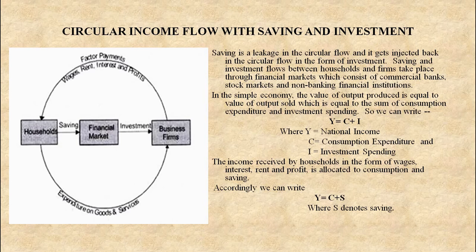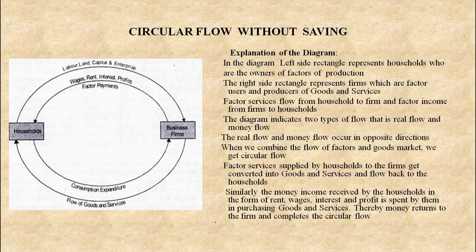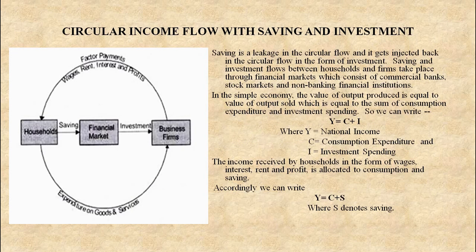Here again, Y stands for national income, C stands for consumption, and S stands for savings. This is about the circular flow with savings and investment. Students, this is the base of the next two points: circular flow with three-sector economy and four-sector economy. So this question can be asked: explain the circular flow of income in a two-sector economy. If it is not mentioned with savings or investment, even then you have to give both diagrams — diagram number one and diagram number two. Thank you.